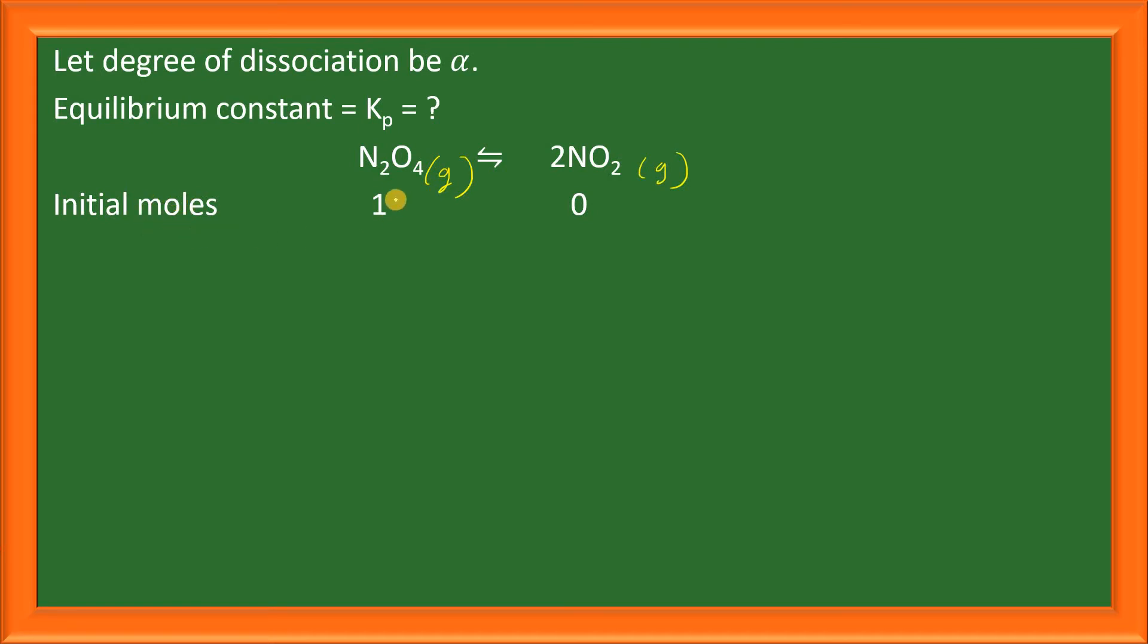Initial moles of N2O4, let it be 1, and initially the number of moles of product will be 0. At equilibrium, this will dissociate and become 1 minus alpha, and it will become 2 alpha, where alpha is the degree of dissociation.